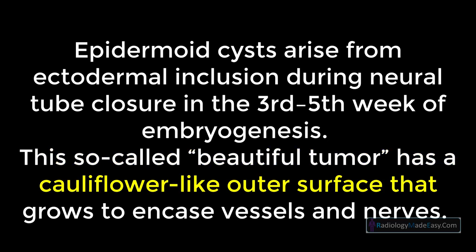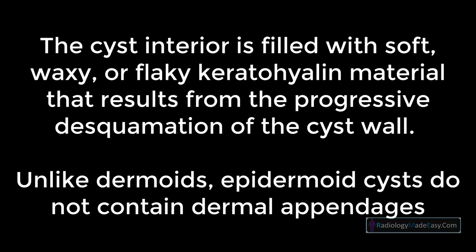This so-called 'beautiful tumor' has a cauliflower-like outer surface that grows to encase vessels and nerves. The cyst interior is filled with soft, waxy, or flaky keratohyaline material resulting from progressive desquamation of the cyst wall. Unlike dermoids, epidermoid cysts do not contain dermal appendages.